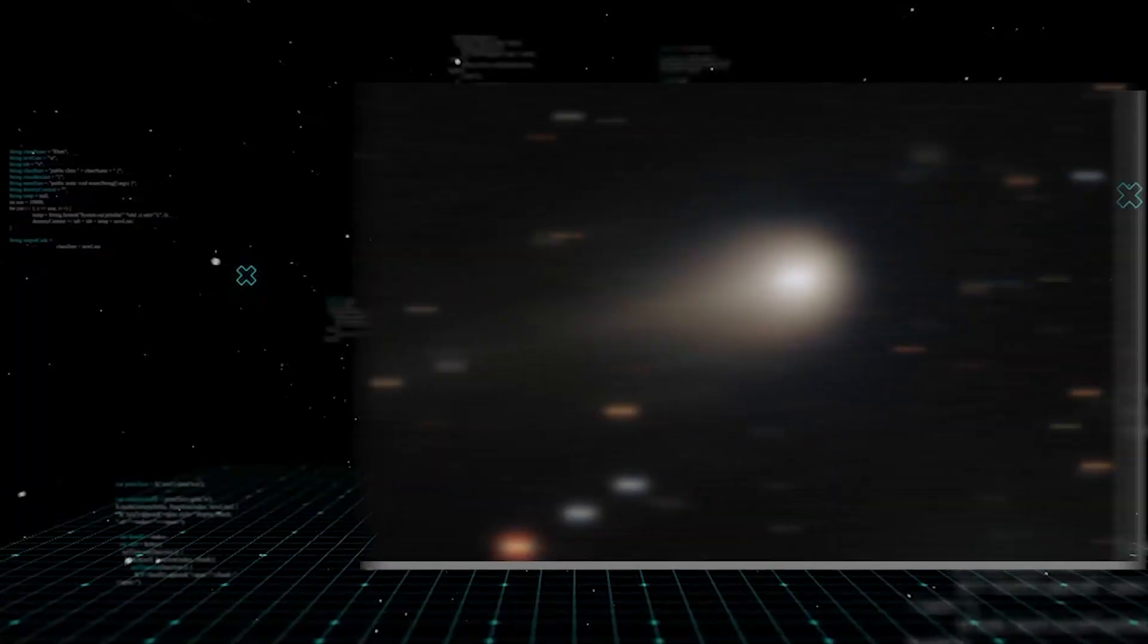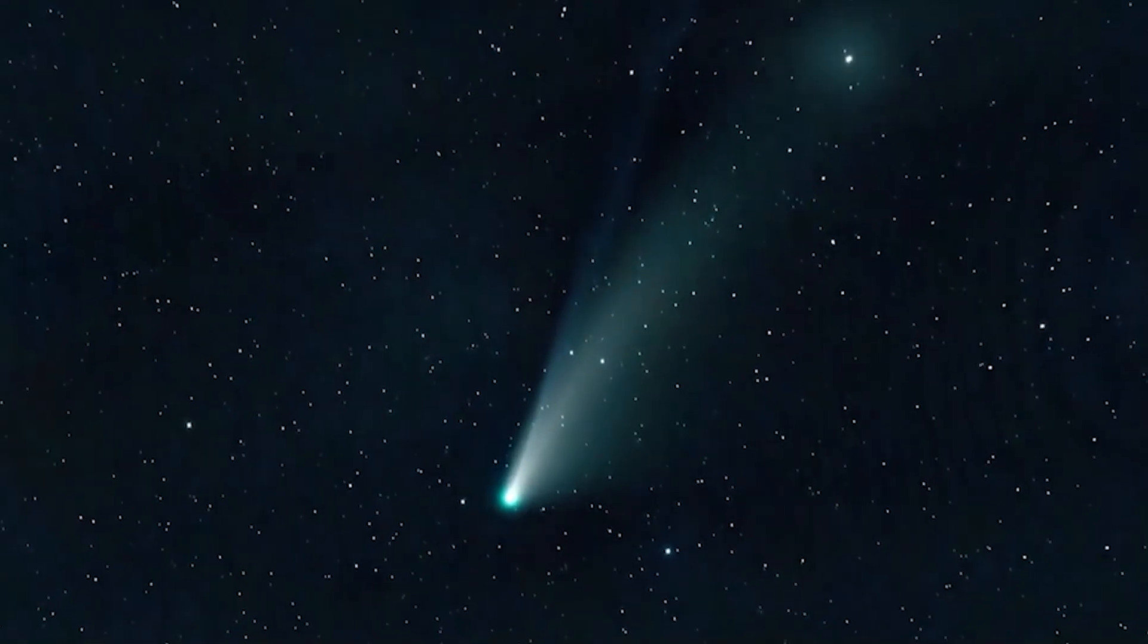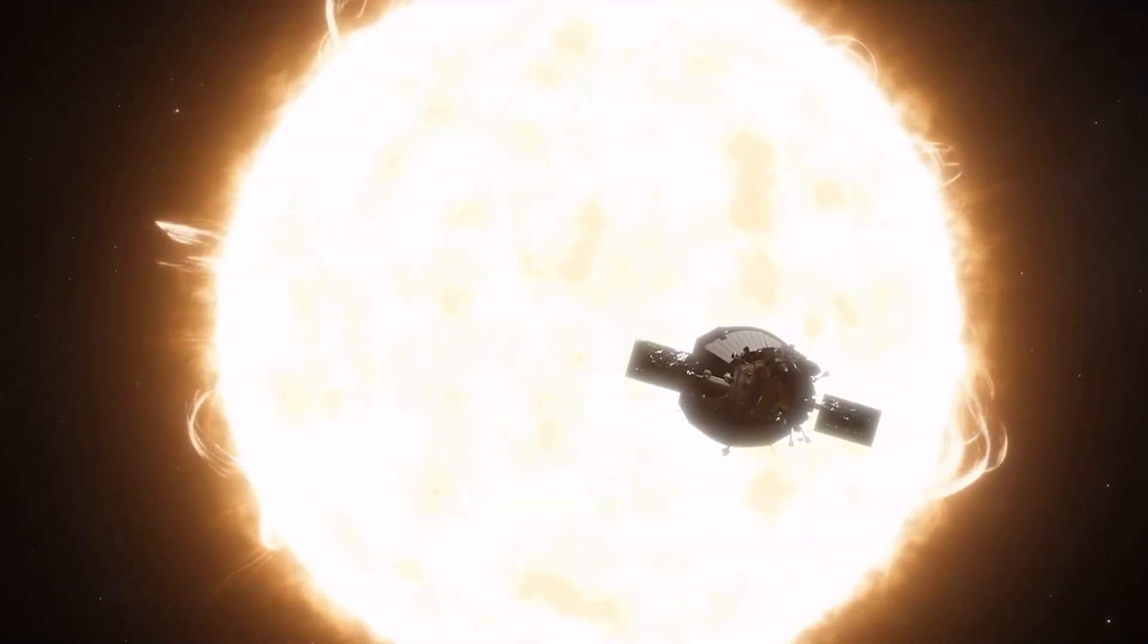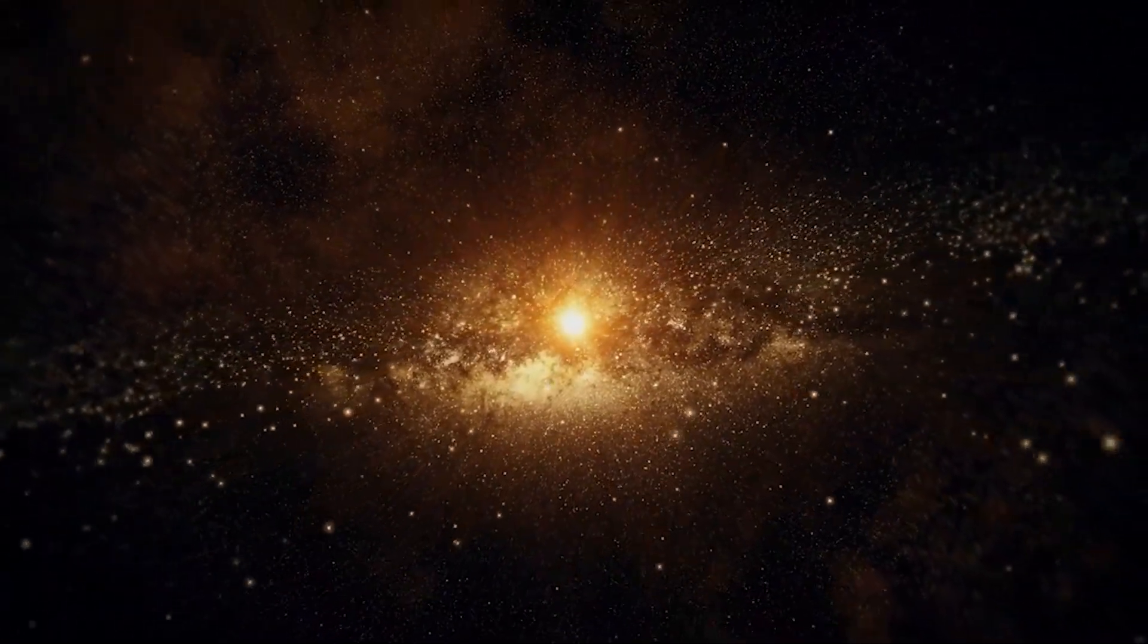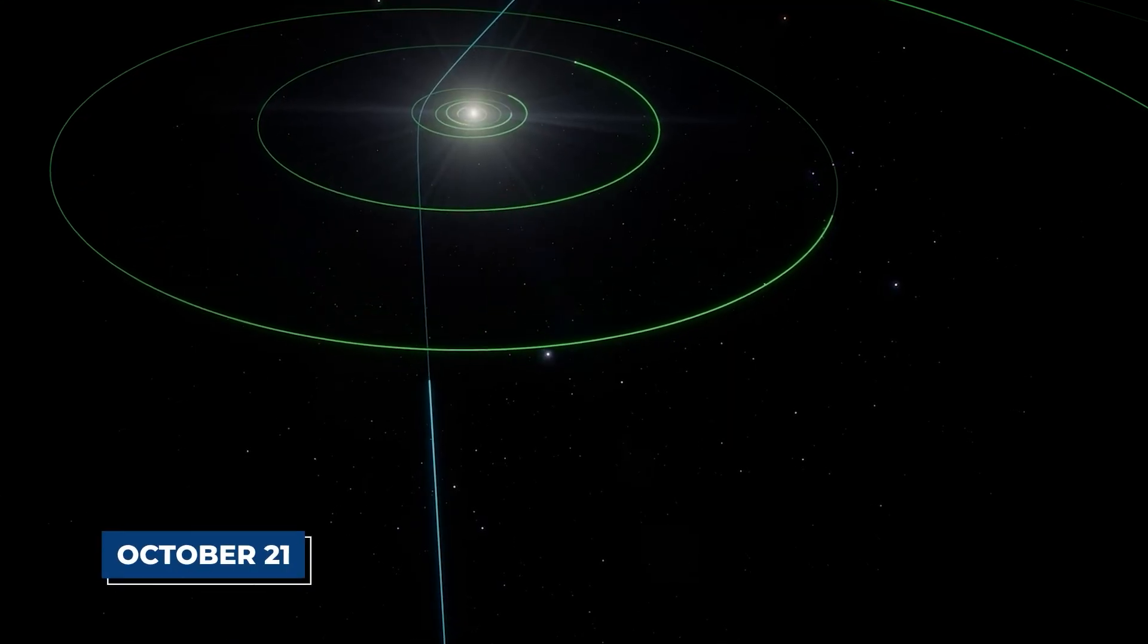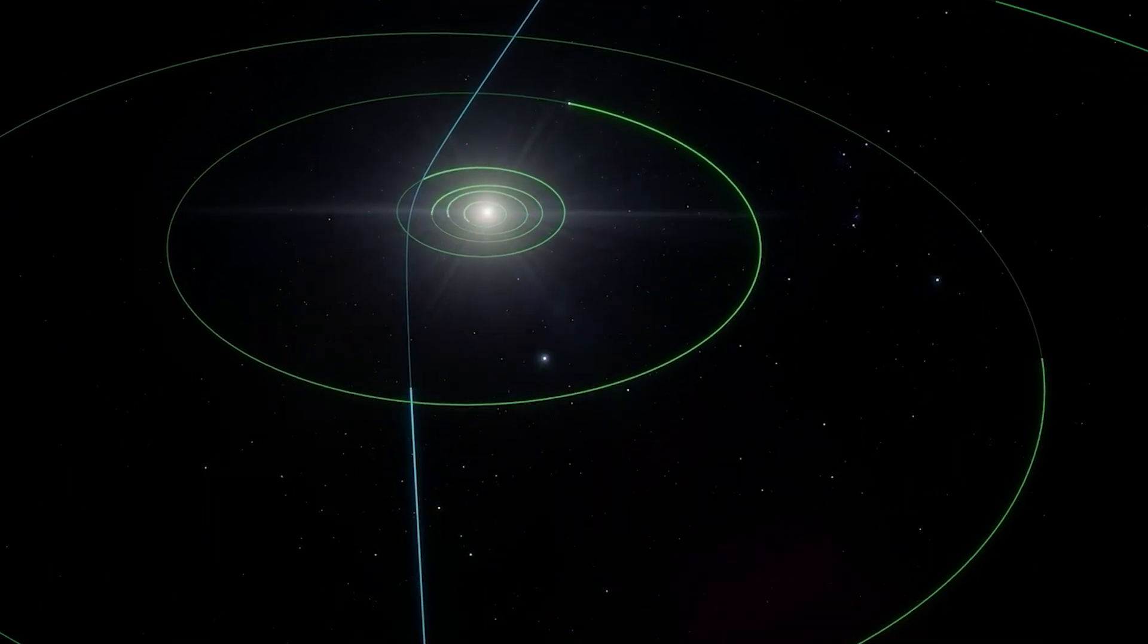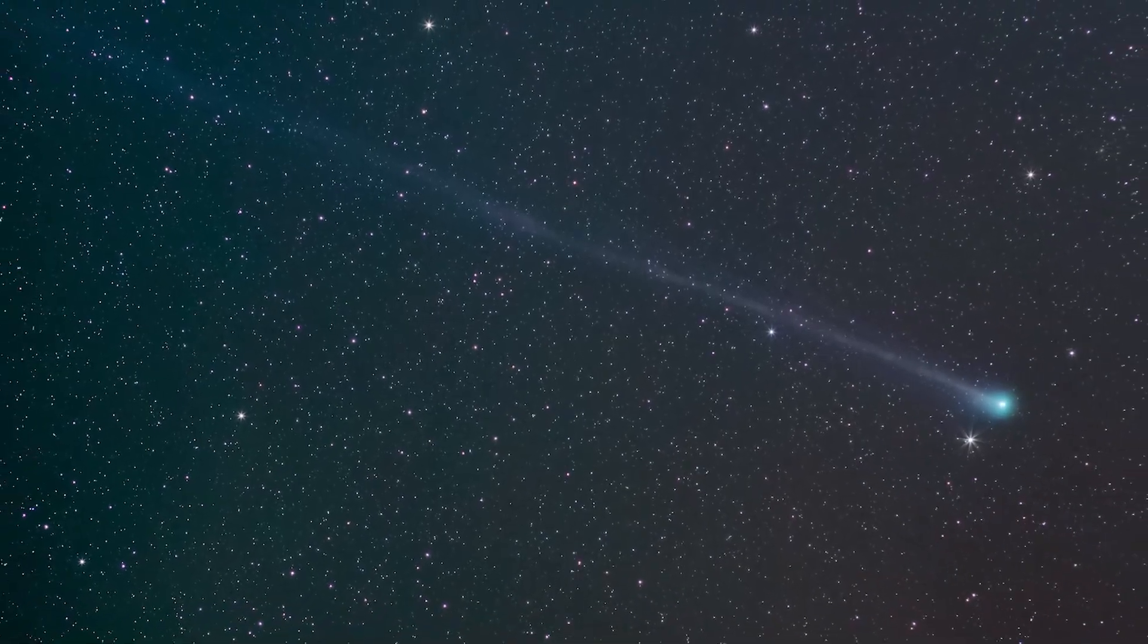If 3I Atlas is a probe under intelligent control, we are forced to ask some deeply uncomfortable questions. What is its mission? Is it a peaceful scout simply gathering data as it passes through, or is it something more? An object with the ability to harness the power of our sun could be capable of anything. The possibilities are as limitless as they are unnerving. This silent panic among those in the know is growing as the object gets closer to a key date, October 21st, when its geometry with the earth and the sun becomes very, very interesting. It's a date that also curiously lines up with the closest approach of Comet Swan.